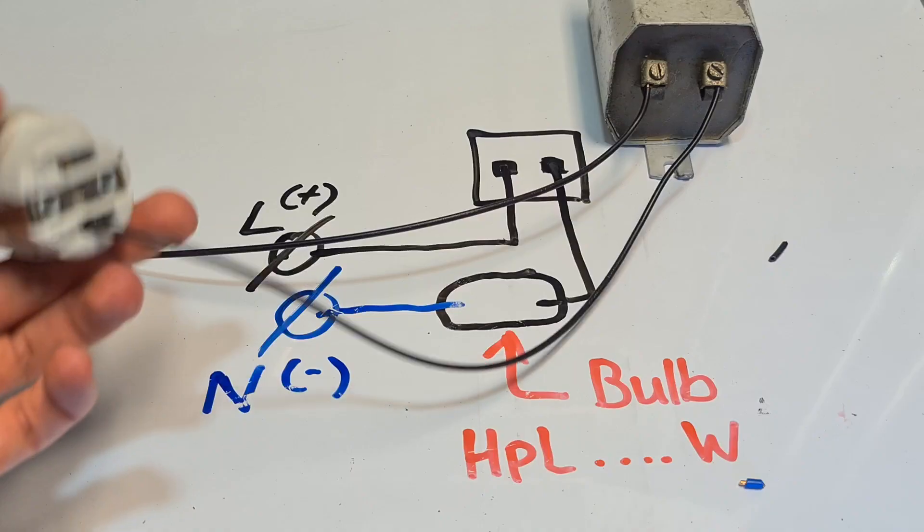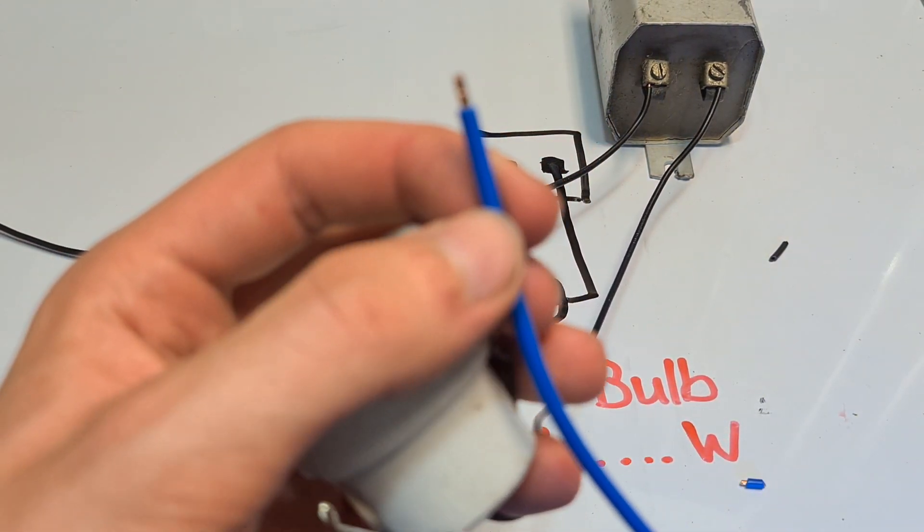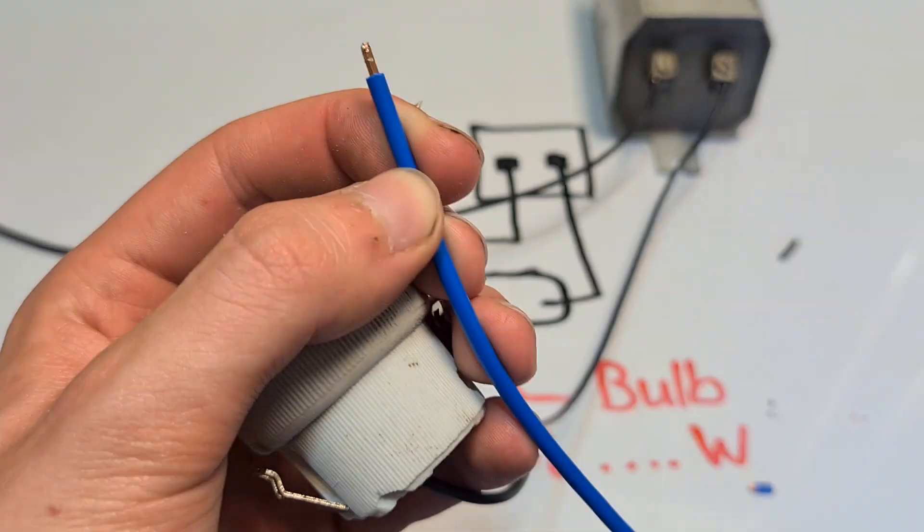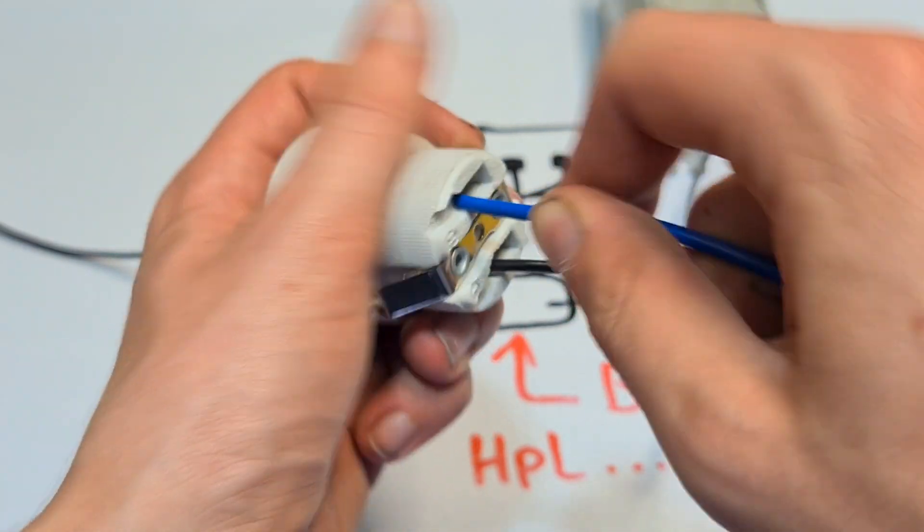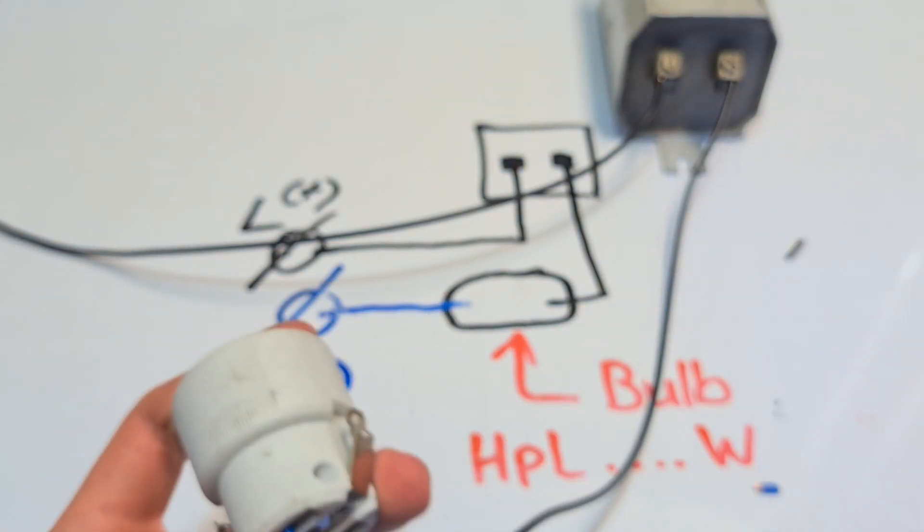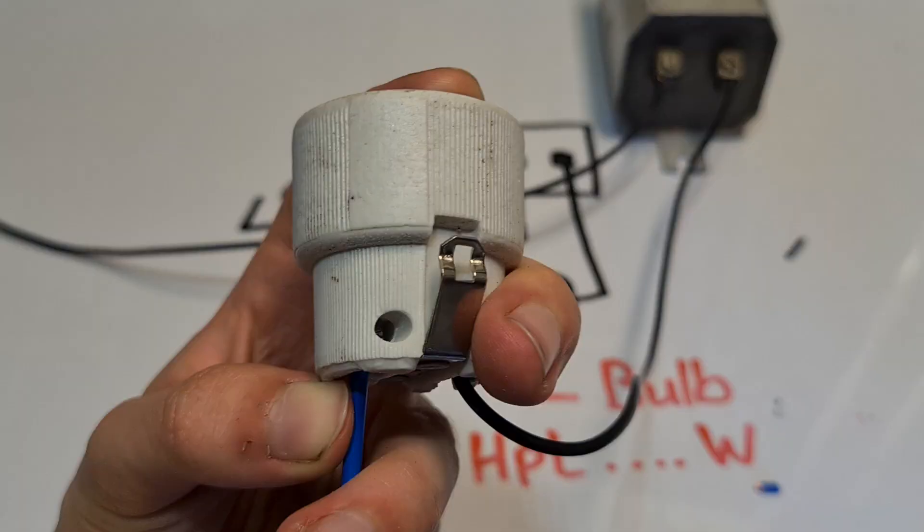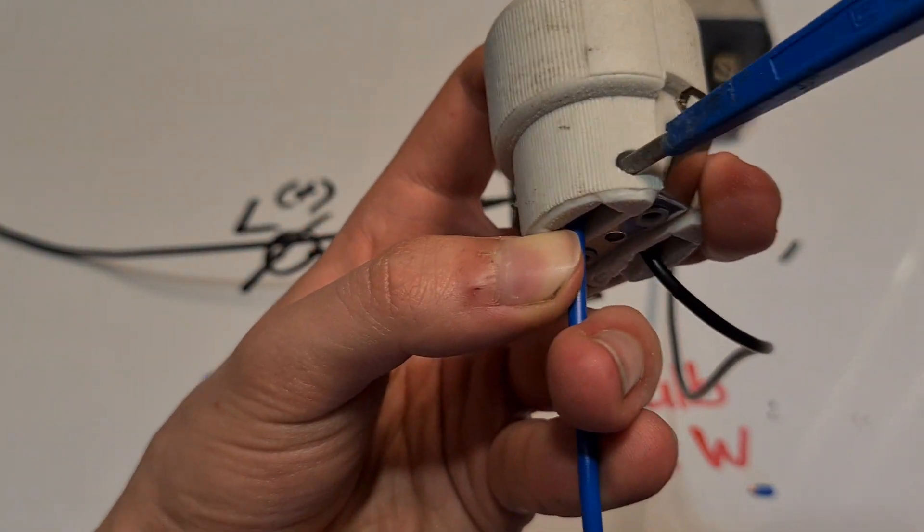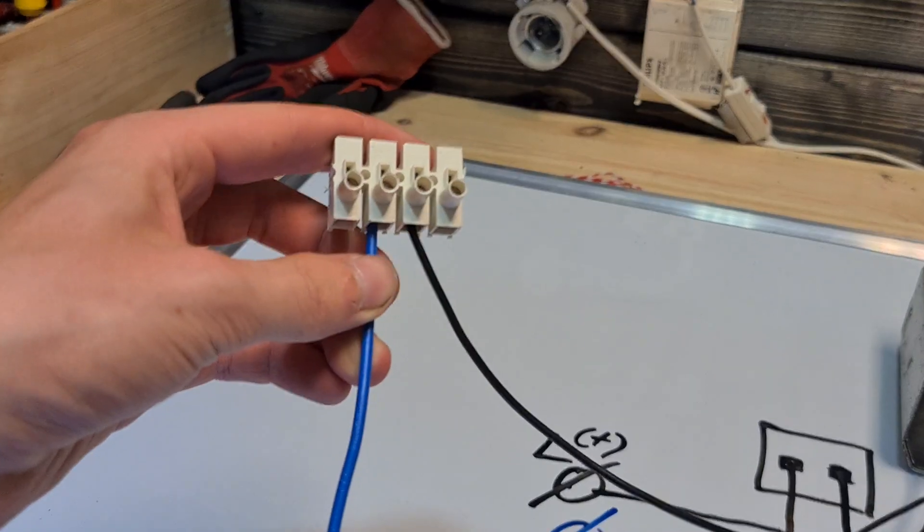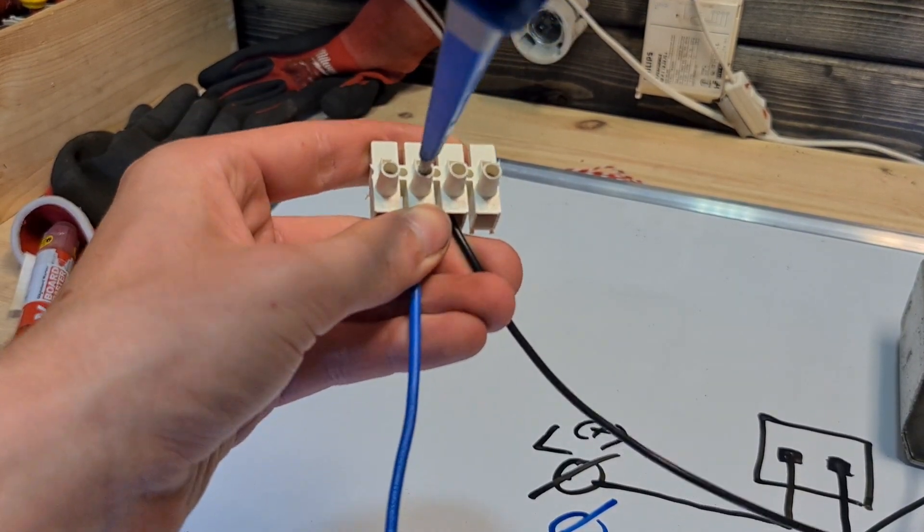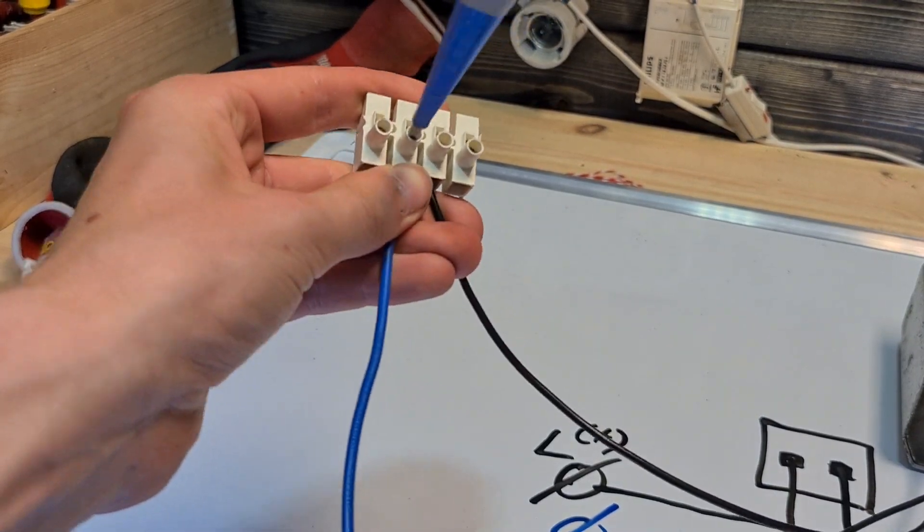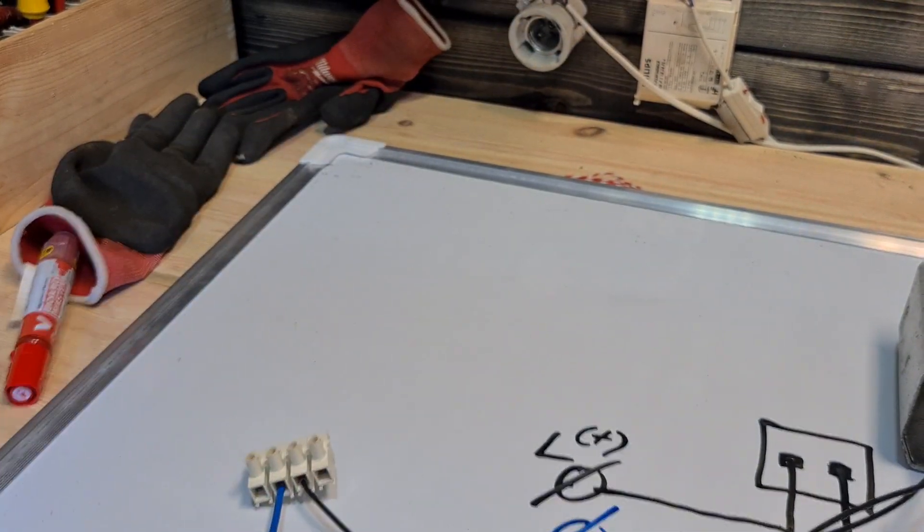Then you want to get your blue cable, strip it. Be careful to strip it not too far since that might not work. And connect it to the other point that's in the socket here. And that's pretty much how you connect a mercury vapor ballast. It's not harder than this.